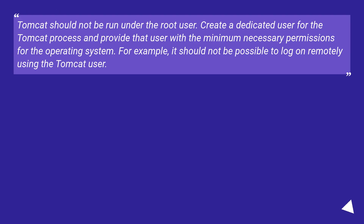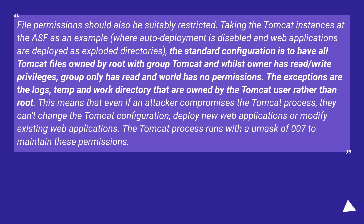Tomcat should not be run under the root user. Create a dedicated user for the Tomcat process and provide that user with the minimum necessary permissions for the operating system. For example, it should not be possible to log on remotely using the Tomcat user. File permissions should also be suitably restricted. Taking the Tomcat instances at the ASP as an example, where auto-deployment is disabled and web applications are deployed as exploded directories, the standard configuration is to have all Tomcat files owned by root with group Tomcat, and whilst the owner has read/write privileges, the group only has read and world has no permissions.